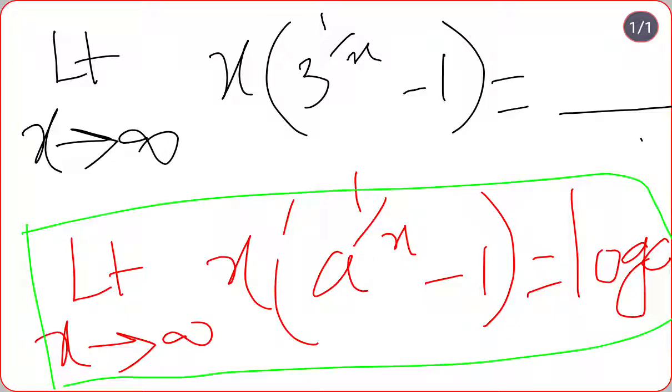So if I compare my shortcut formula with the question, I will get a value as 3. So I will just substitute the same a value in place of log a. So my answer comes out as log 3. Log 3 will be the answer to this question.